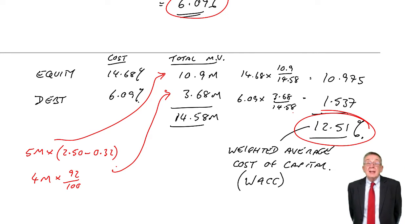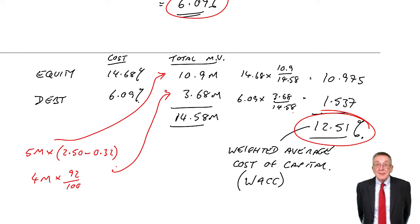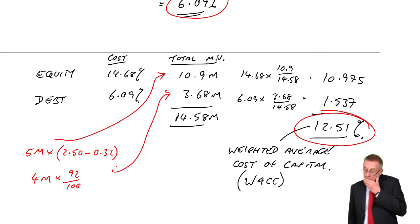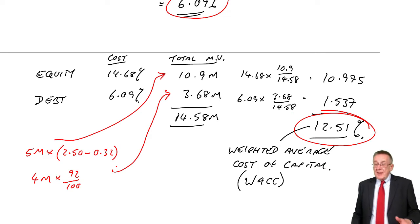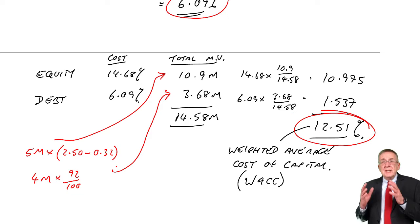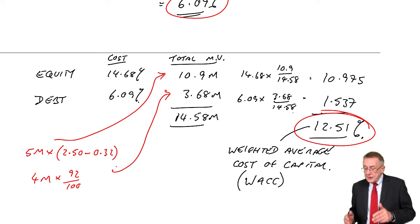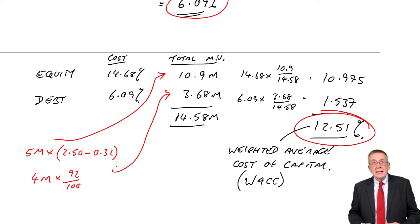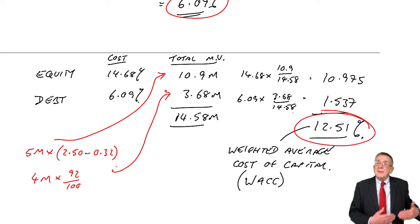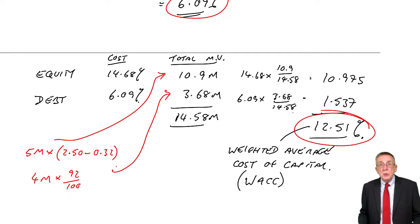We then arithmetically took a weighted average, weighted by the total market values, and got 12.51. That's usually the rate we'd use for investment appraisal — in the exam, to the nearest percent. But think about what we're doing. We need to know what return shareholders and debt lenders are currently requiring if they were buying shares or debt on the stock exchange. If equity investors are currently requiring 14.68, we'll effectively have to give them 14.68 on any new finance we raise.